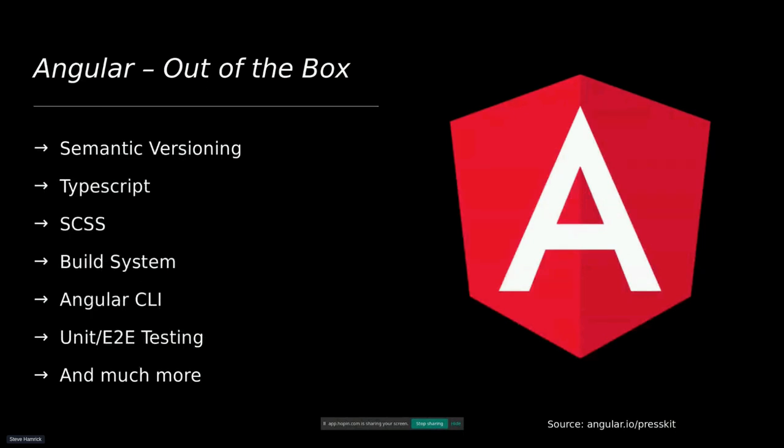Out of the box you get semantic versioning, TypeScript, SCSS, a complete build system, the Angular CLI which handles just about everything you could want, and unit and end-to-end testing out of the box — which is very useful as that's usually something that gets overlooked and is harder to add later.